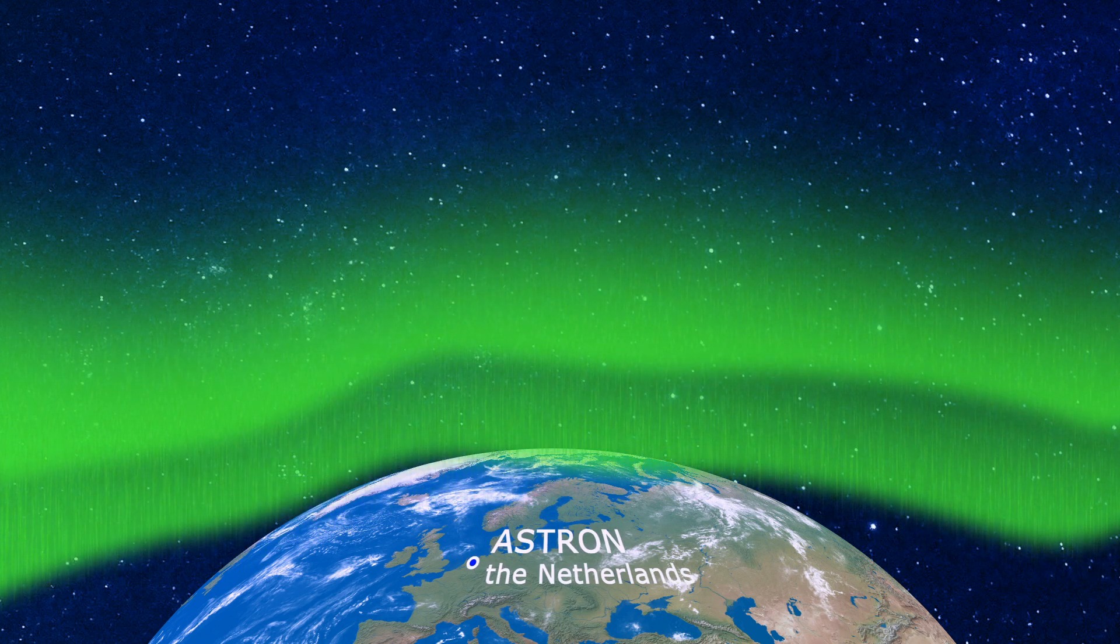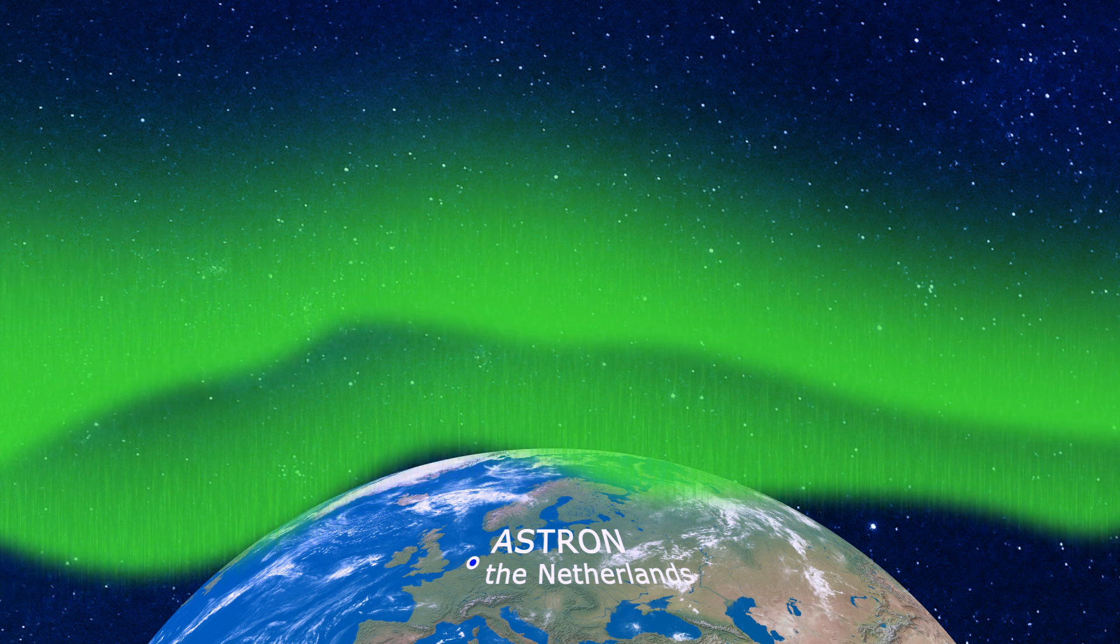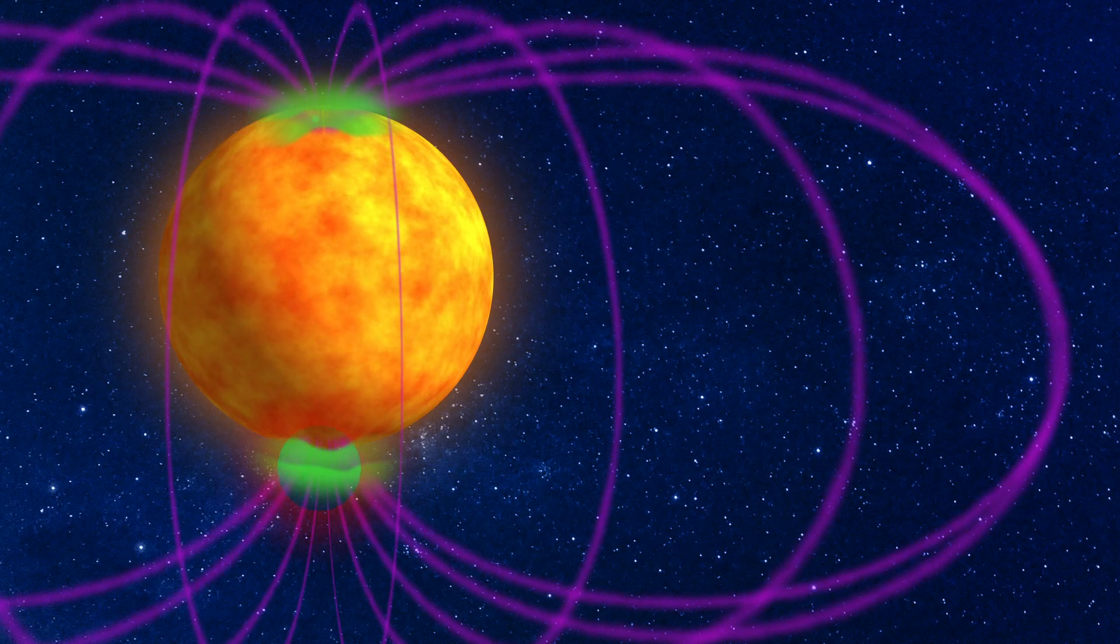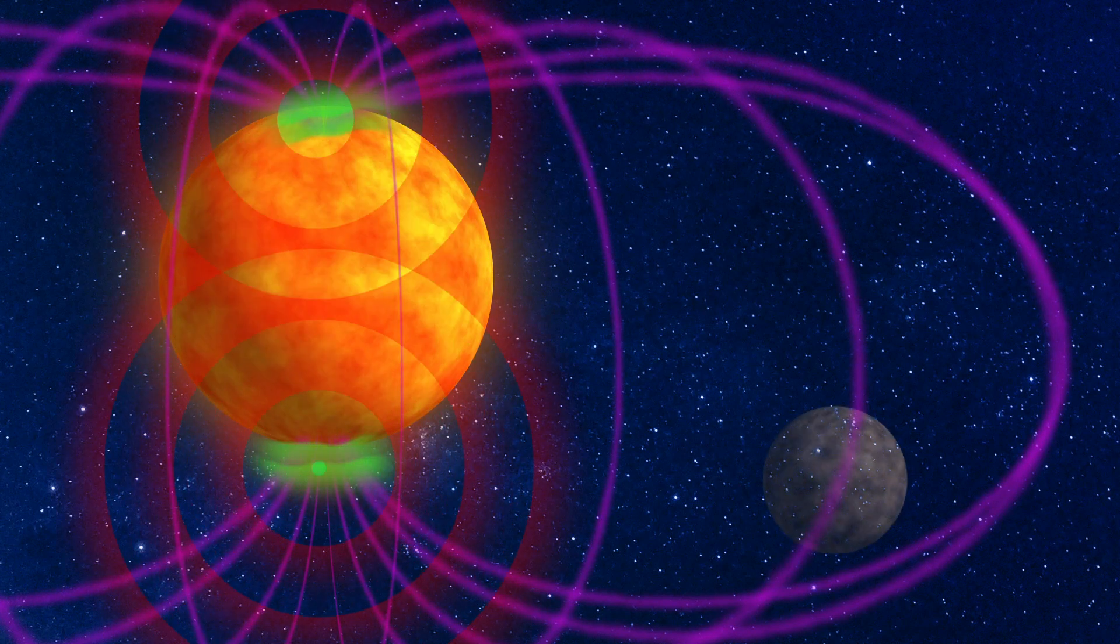Now, astronomers from Astron, together with teams based at other institutes, have detected radio waves from a star intimately connected to auroras, which means that there must be an exoplanet there.